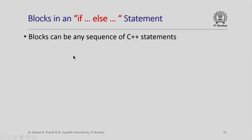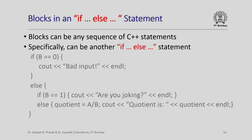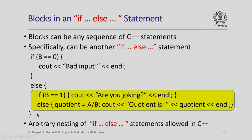The blocks in an if-else statement can be any sequence of C++ statements — in fact they can be another if-else statement itself. For example, if b is 0 then one statement executes; otherwise, another if-else statement executes. So inside the else branch I have a statement which is itself another if-else statement, and C++ allows arbitrary nesting of if-else statements, enabling programs with fairly complicated control flow.